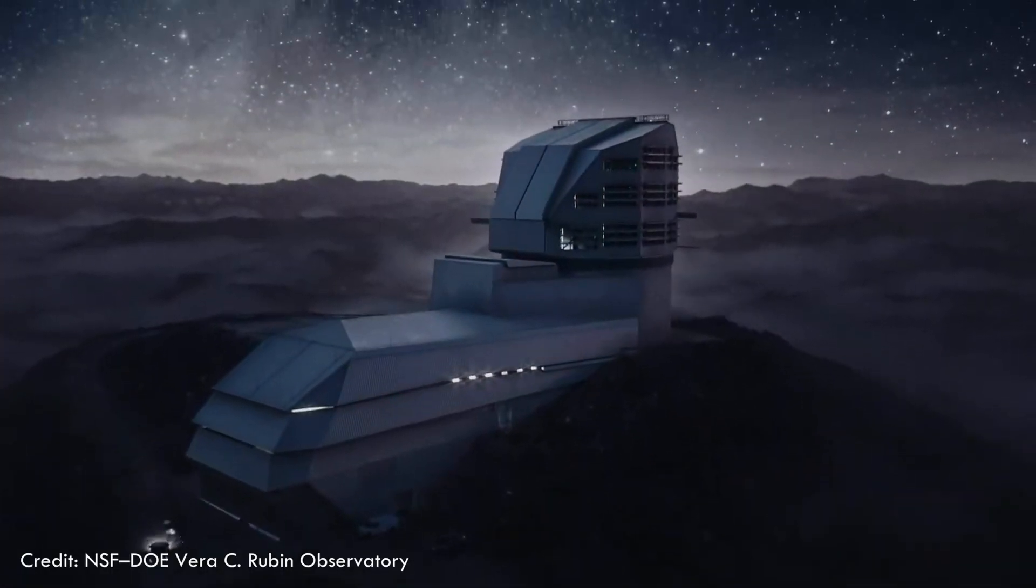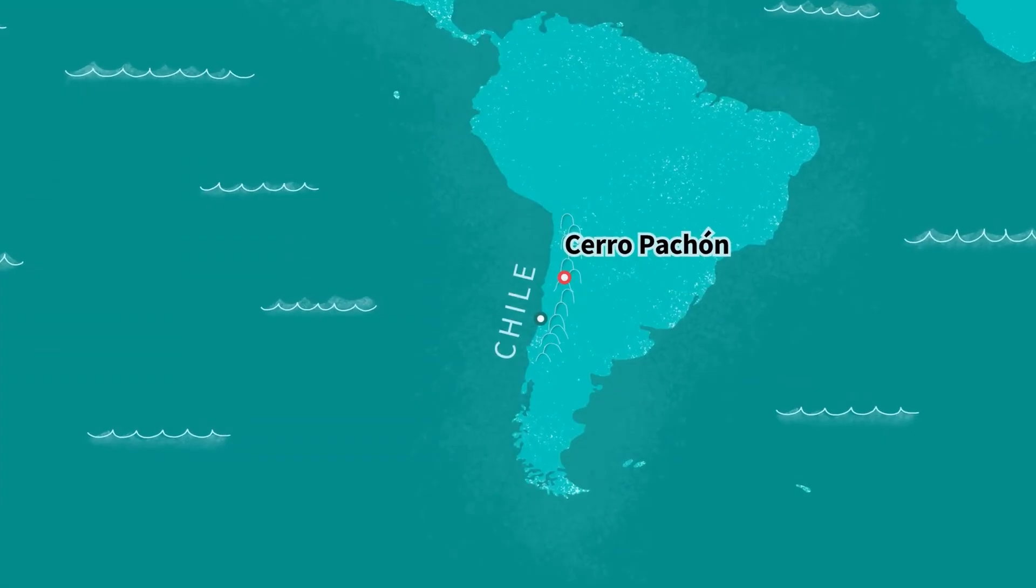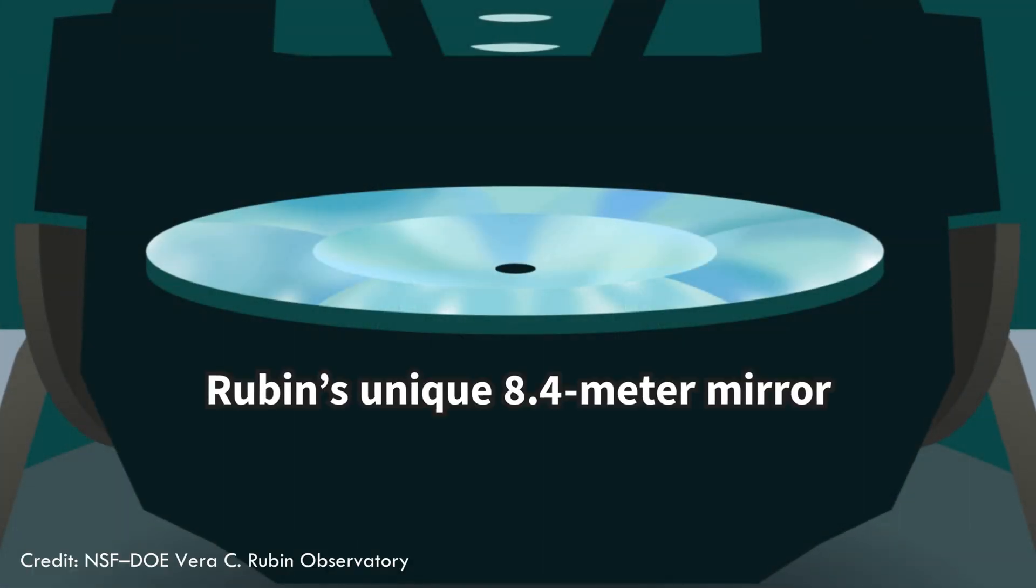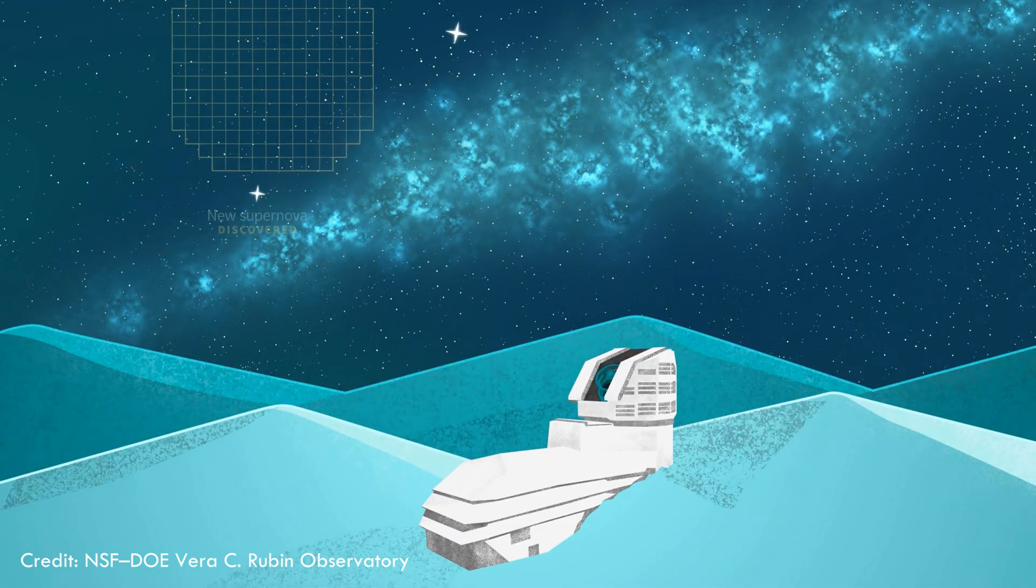You see, Vera Rubin Observatory is perched high at nearly 2,700 meters in Chile's Atacama Desert with its colossal celestial camera. Its primary mirror spans 8.4 meters, capturing vast swathes of the sky in a single shot.